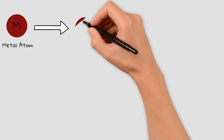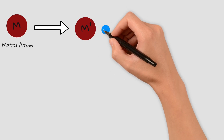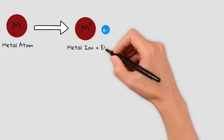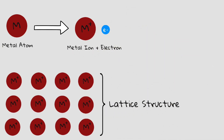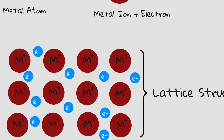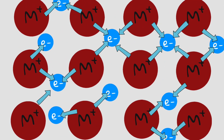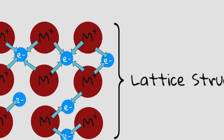In a metal, atoms lose their outer electrons, forming positive metal ions arranged in a lattice structure. The lost electrons don't stay with one atom — instead they move freely throughout the entire structure, creating a so-called sea of free electrons. These delocalized electrons hold the metal ions together with a strong force of attraction.